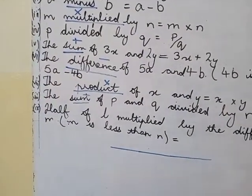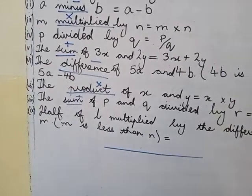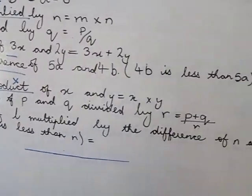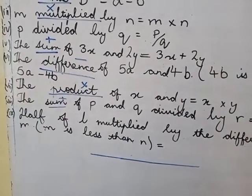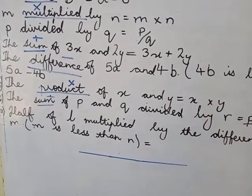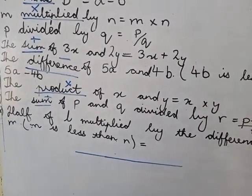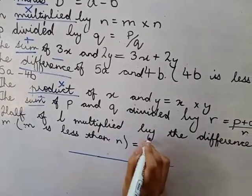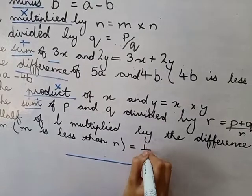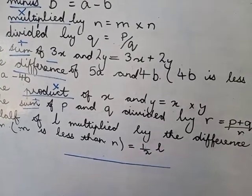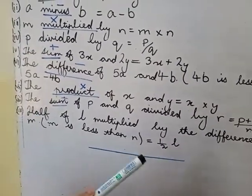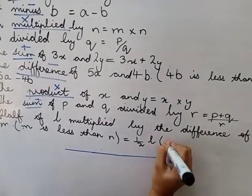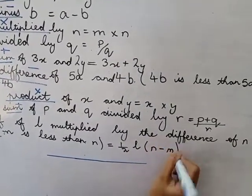The 9th and last one is half of L multiplied by the difference of N and M. In the bracket, there is written M is less than N. So half of L means 1 over 2 L. M is less than N, so in the bracket we are going to write N minus M.